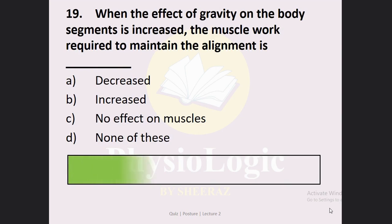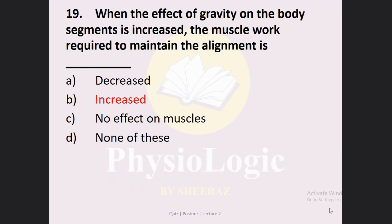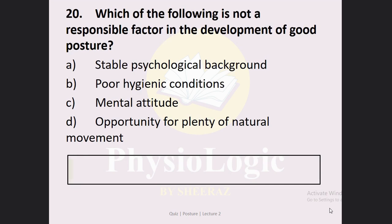Next MCQ: When the effect of gravity on the body segments is increased, the muscle work required to maintain the alignment is — Option A: decrease, Option B: increase, Option C: no effect on the muscle, Option D: none of these. The correct option is Option B: increase. When the effect of gravity on the body segments increases, the muscles counteracting gravity have to work harder to maintain body alignment, so their work will be increased.